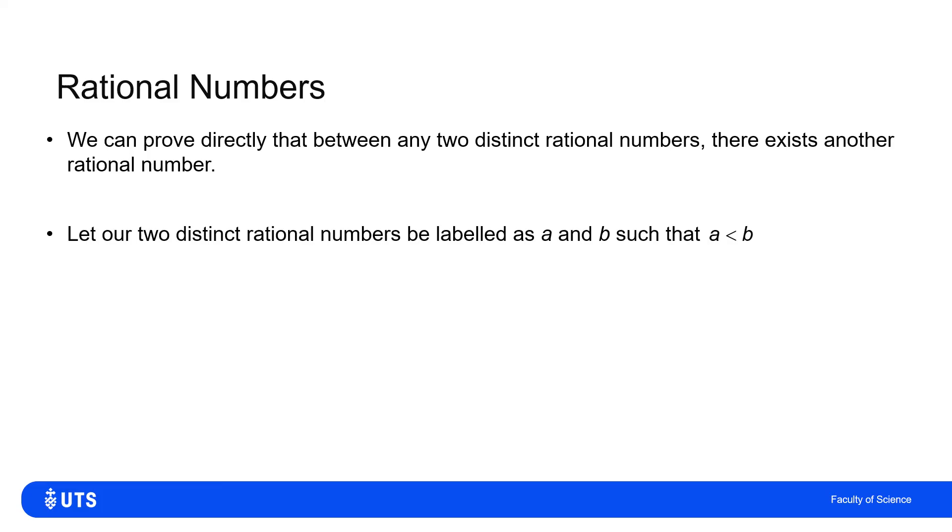So I'm going to assume that I've got two different rational numbers, A and B, such as A is less than B. They're both rational, so I'll call A P over Q and B R over S, where P, Q, R and S are all integers.